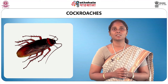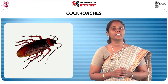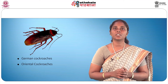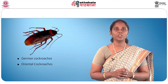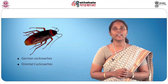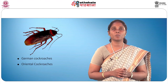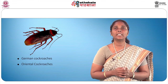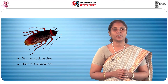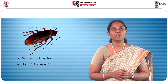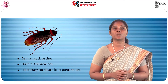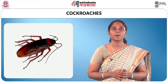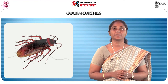Cockroaches are nocturnal insects present in drains and dark secluded places. There are two types: German cockroaches, which are about 10 to 15 millimetres in length, lighter and yellowish-brown, can climb smooth vertical surfaces and prefer warm and humid conditions; and oriental cockroaches, which are about 20 to 22 millimetres in length, dark brown in colour, found in cooler and less humid areas such as drains. Cockroaches cause diseases such as dysentery and gastroenteritis, feed on faecal matter and food, and are among the most difficult pests to eradicate. Proprietary cockroach killer preparations can be used, and pest control experts should be called if the problem persists.